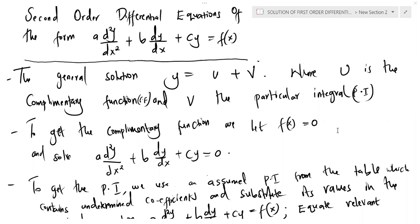I'd like us to look at the solution of second-order differential equations of this particular form, where a, b, c are constants, and we have f of x on the other side — because in the other examples, we had zero there. To find the general solution of this second-order differential equation, we get two parts. The general solution is given by u plus v, where u is the complementary function and v is the particular integral.